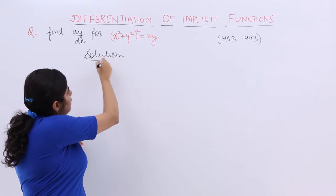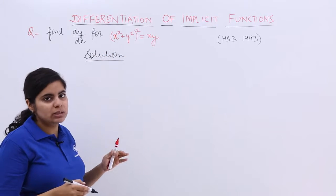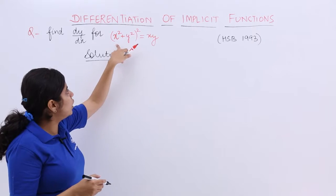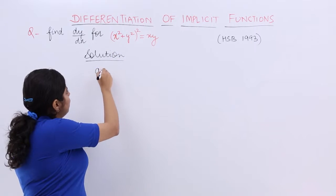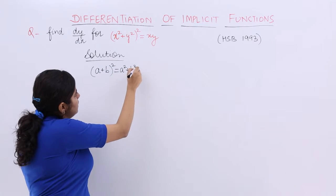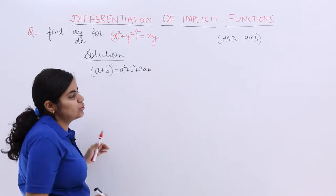You see that the term is x square plus y square whole square. So let's expand it. When we are going to expand it, it is the formula of (a + b)². I write the formula first. (a + b)² = a² + b² + 2ab. We are going to use this formula.